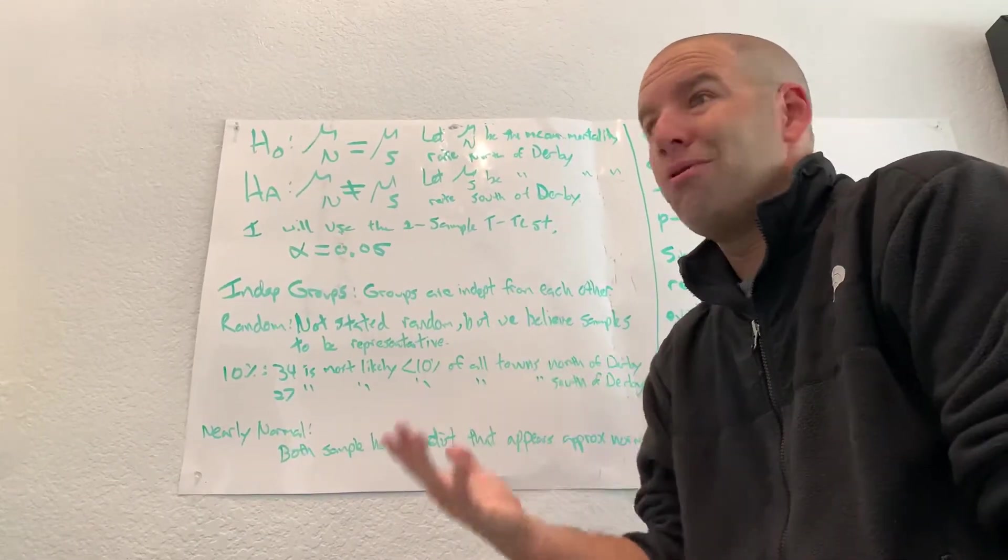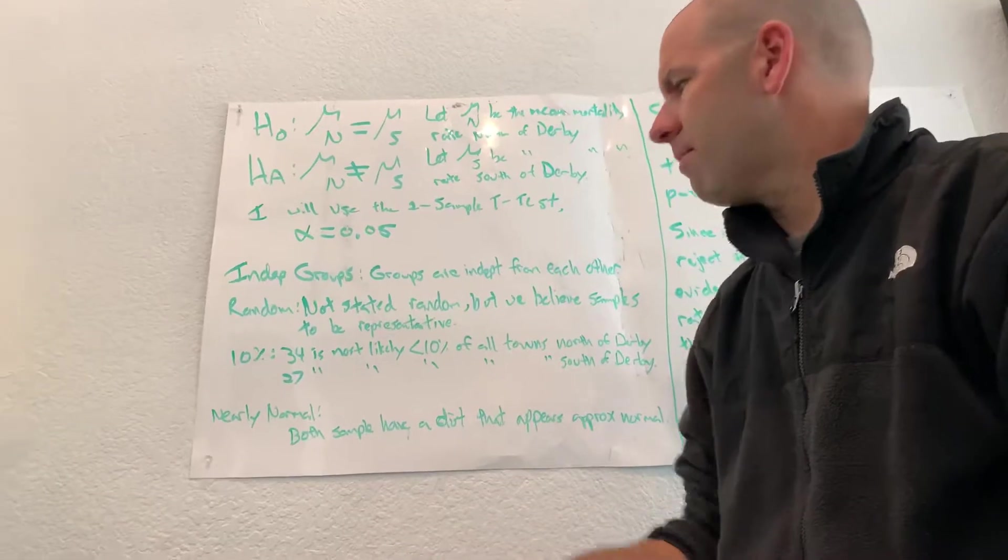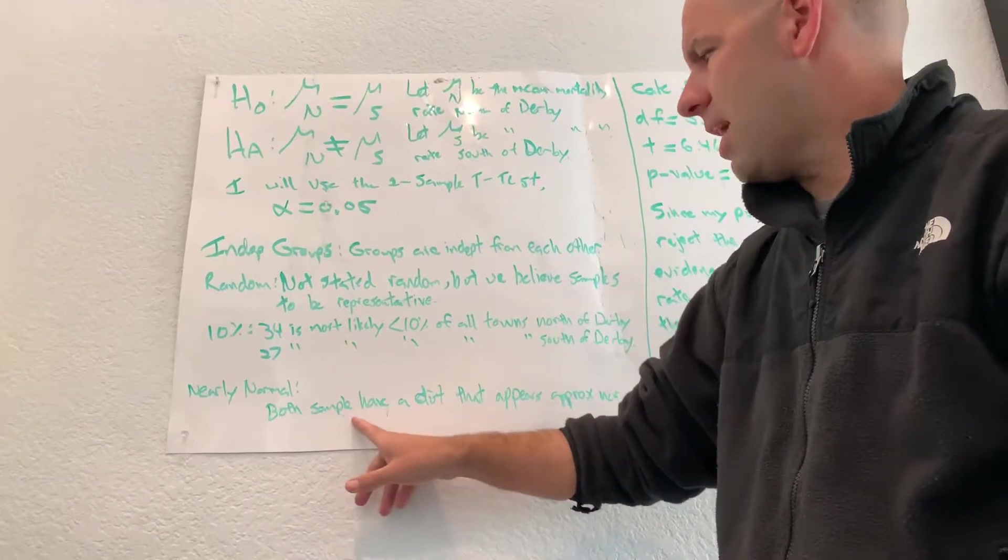And then, both samples have a distribution that appears approximately normal.